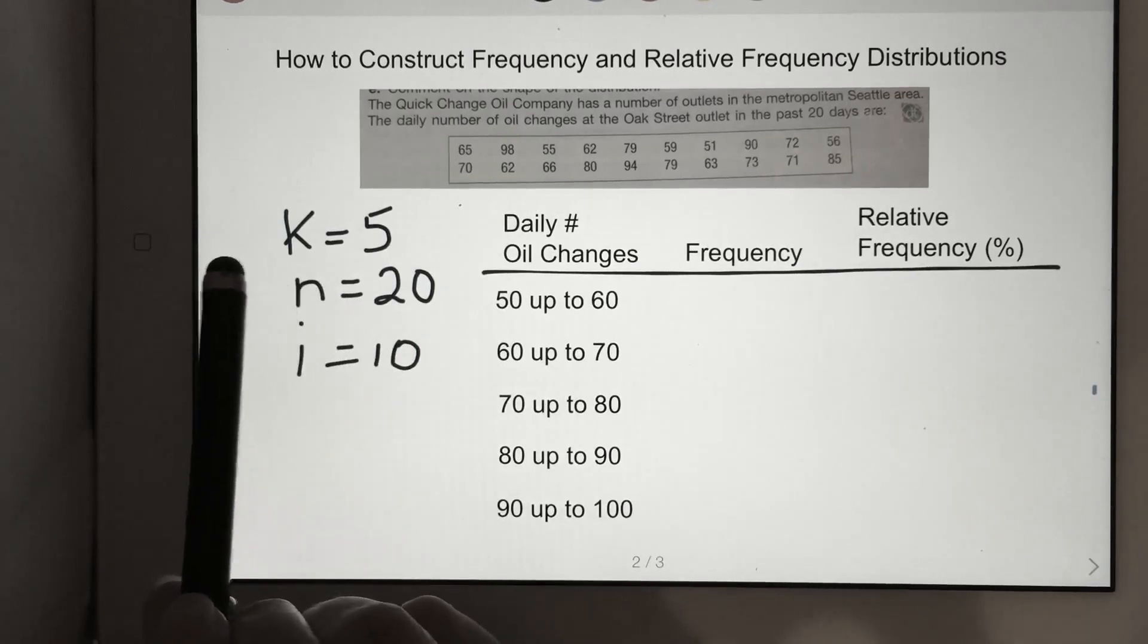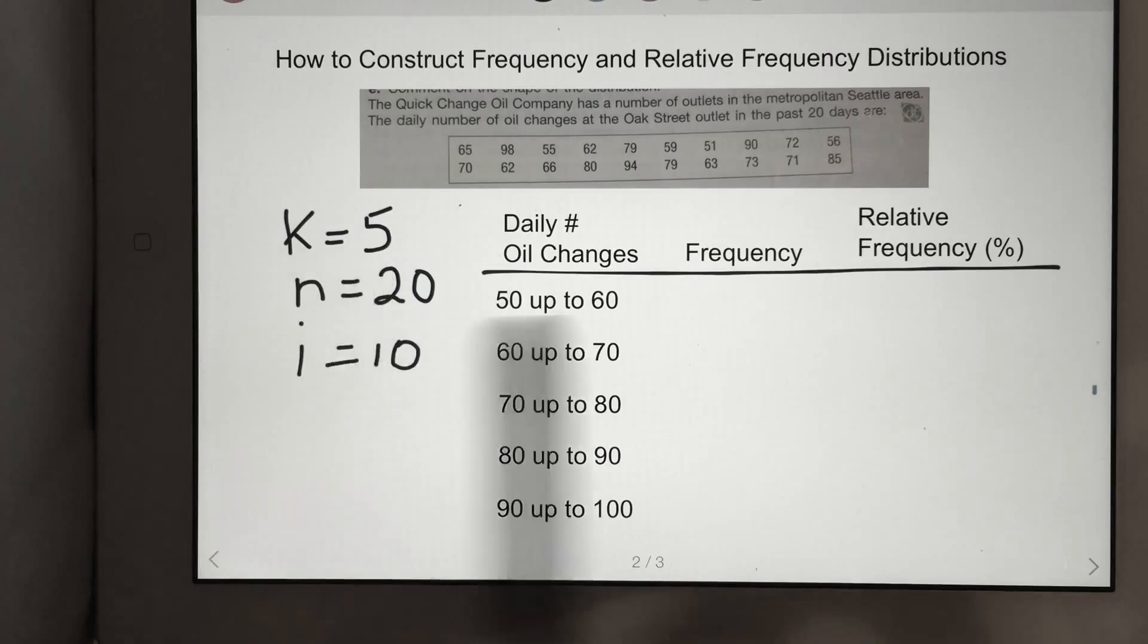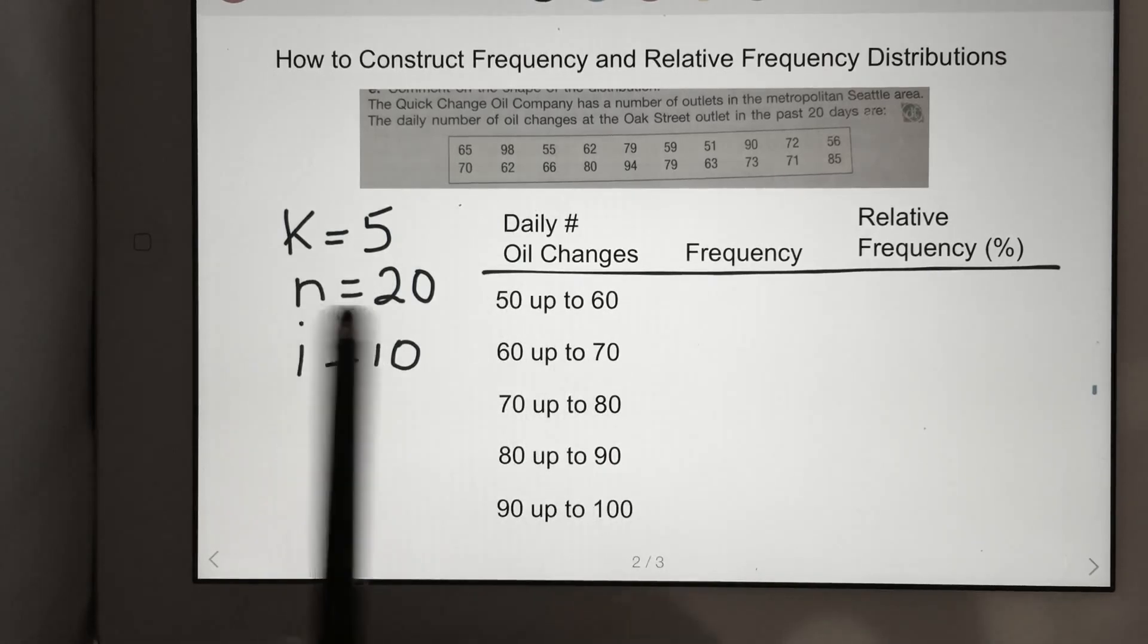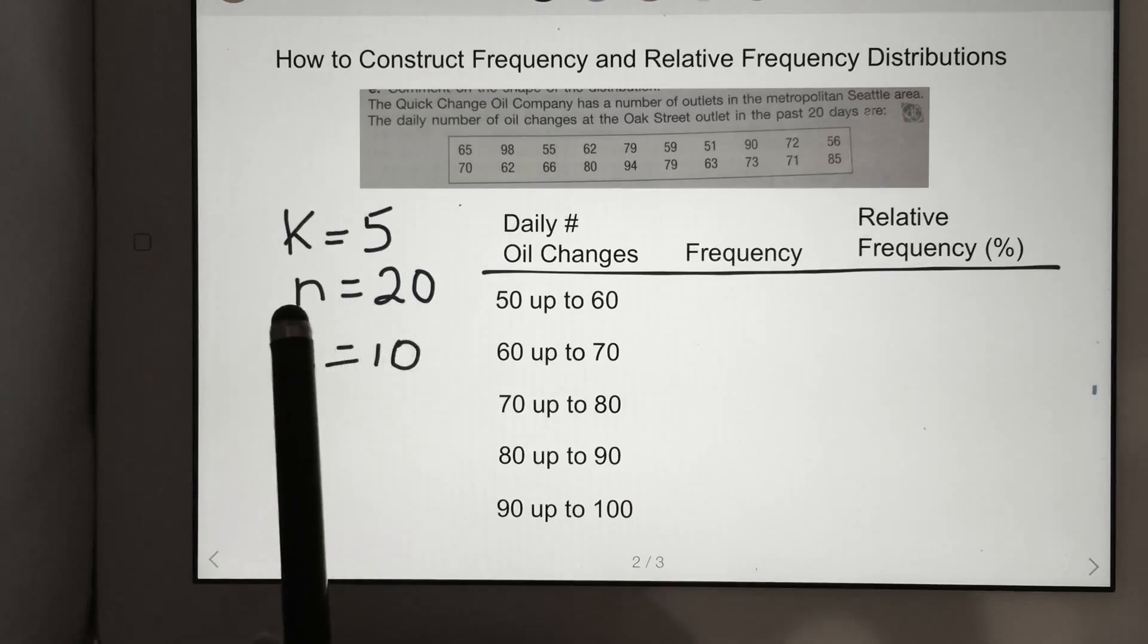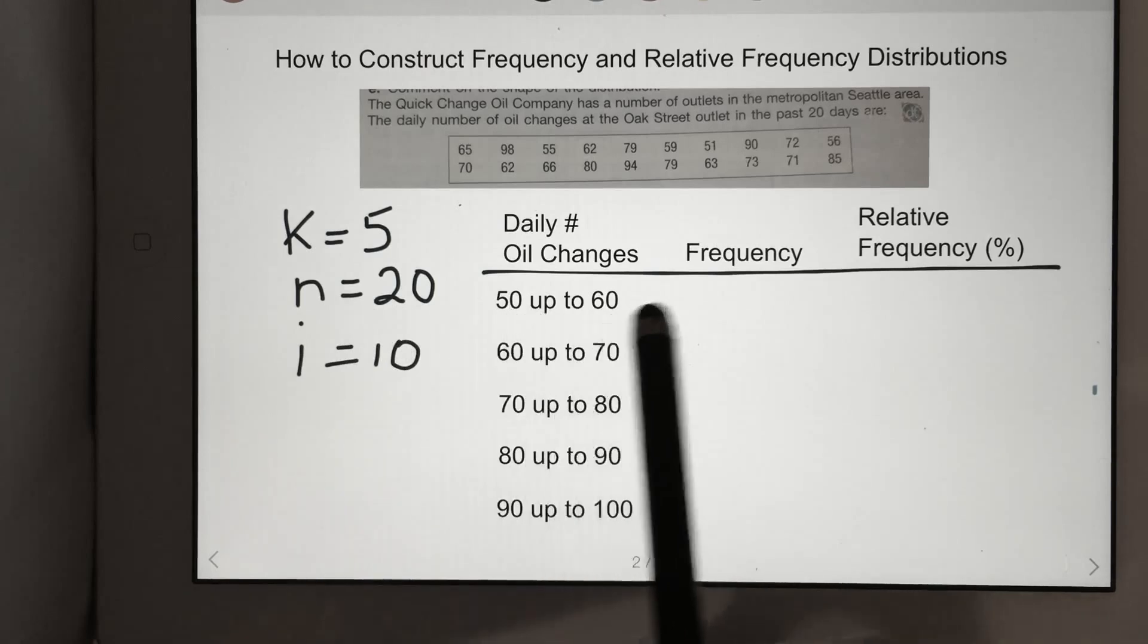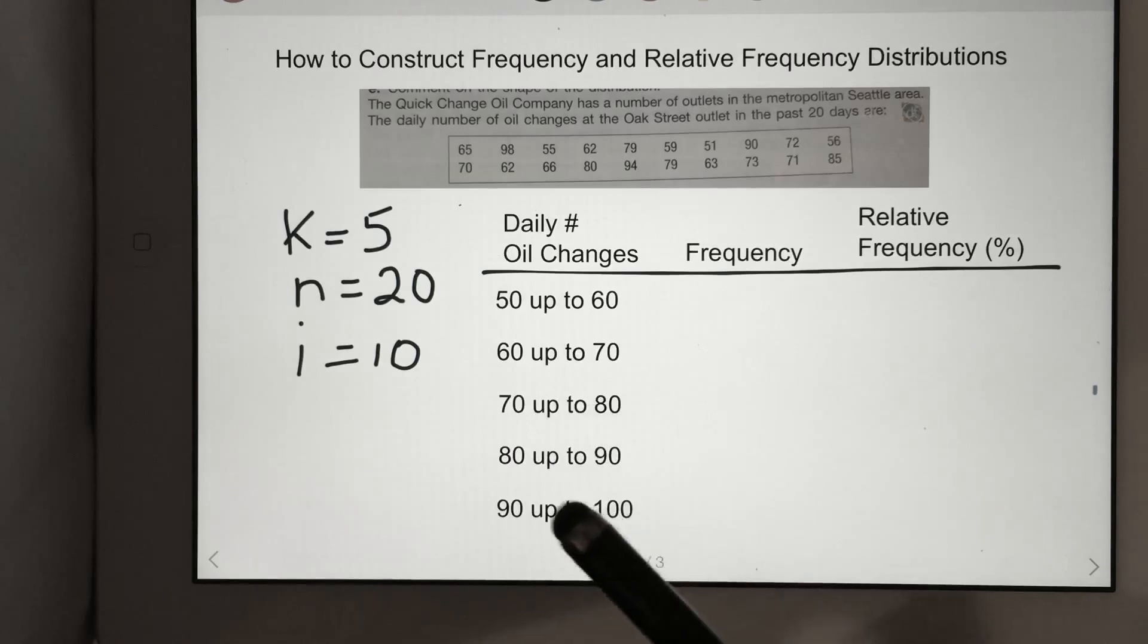Previously we found that the number of classes is going to be 5: 1, 2, 3, 4, 5. We have 20 observations, so n stands for the number of observations, and the class interval is 10. So 50 up to 60, 60 up to 70—there's a class interval of 10.